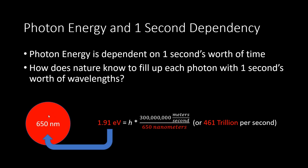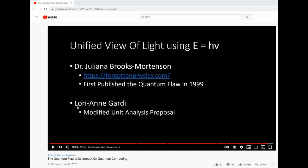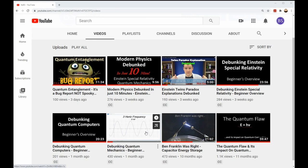The Einstein photon particle doesn't make sense because it is wrong. Dr. Juliana Brooks Mortensen figured this out back in the 90s, and then she inspired Lori Gardy to fix the problem by proposing her modified unit analysis. All I did was give up the idea of the photon, and then I figured out what was dependent upon it, and it led me down this path.